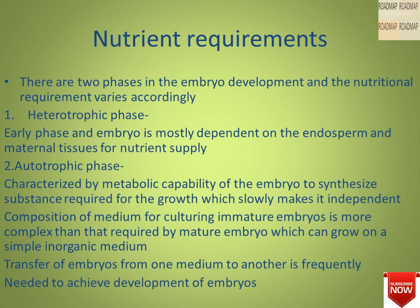There are two phases in embryo development and the nutritional requirement varies accordingly. The first phase is the heterotrophic phase and the other is the autotrophic phase. The heterotrophic phase is the early phase where the embryo is mostly dependent on the endosperm and maternal tissues for nutrient supply. The autotrophic phase is characterized by the metabolic capability of the embryo to synthesize substances required for growth, slowly making it independent. The composition of the medium for culturing immature embryos is more complex than that required by the mature embryo, which can grow on a simple inorganic medium. Transfer of embryos from one medium to another is frequently needed to achieve embryo development.